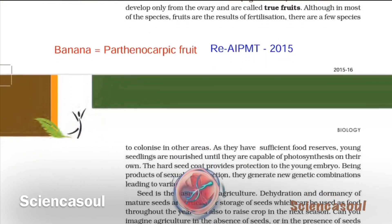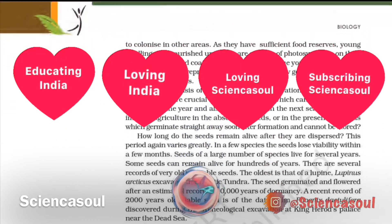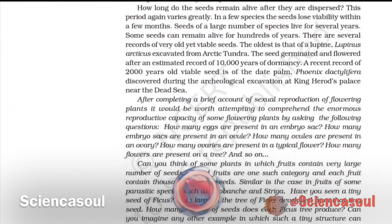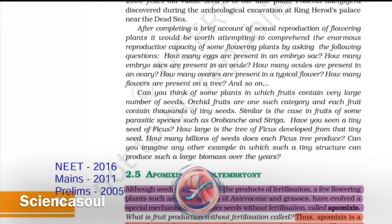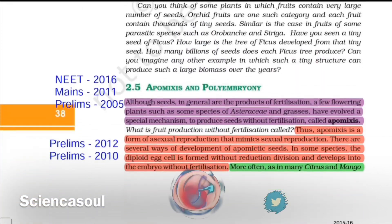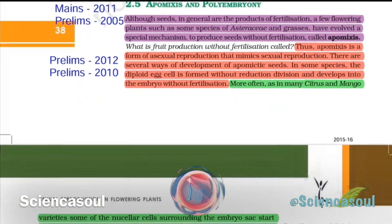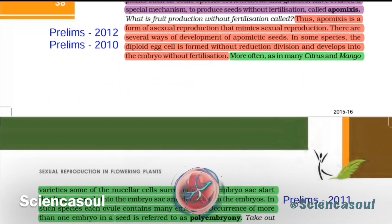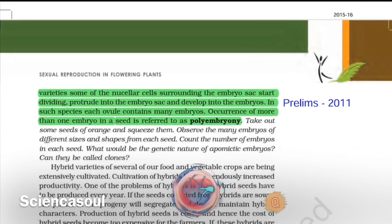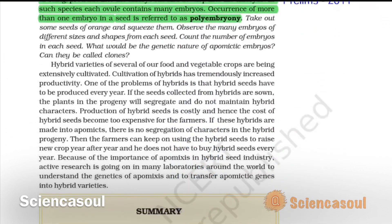But don't just stop after this chapter — try this with all chapters. I wish you all the best for your preparation. Apomixis and polyembryony is one of the most important topics, and we can't ignore it as from 2005 to 2019 it appeared 6 times. So read it very carefully.